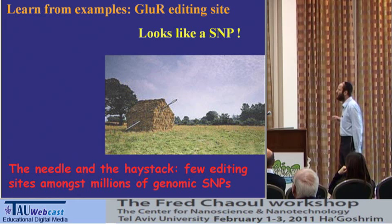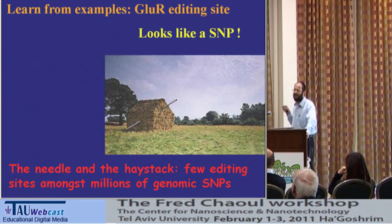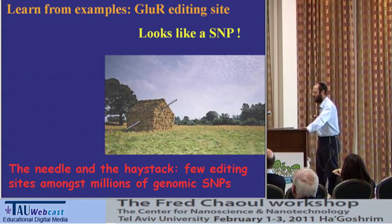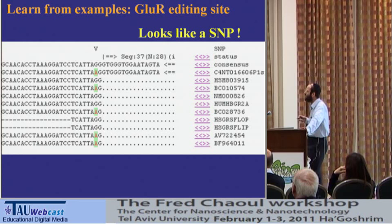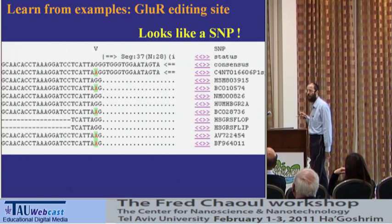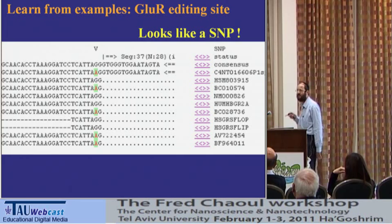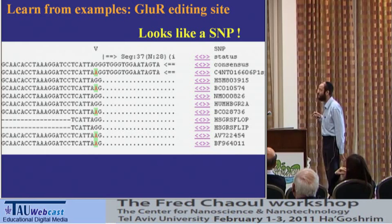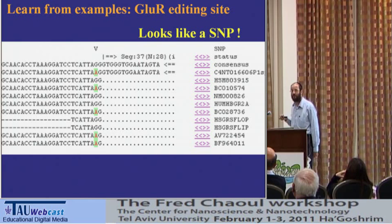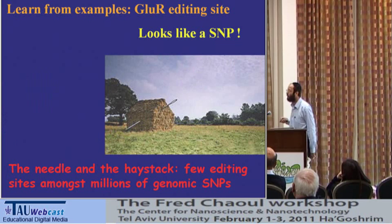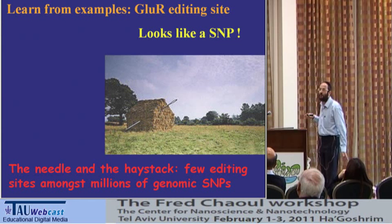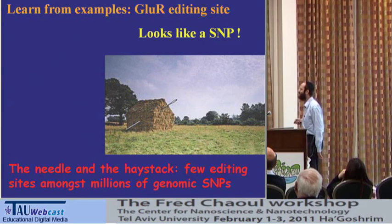The problem is that there are many such sites. The main source of noise, at least initially, was that this pattern — part of the sequences giving one nucleotide and others giving another — is exactly what you see at a polymorphic site. Polymorphic means different individuals have different nucleotides in the same place, and there are millions of such sites in the human genome — about 1% of nucleotides are polymorphic. So this is the classic needle-in-a-haystack problem: tens of millions of polymorphic sites versus an unknown number of editing sites.